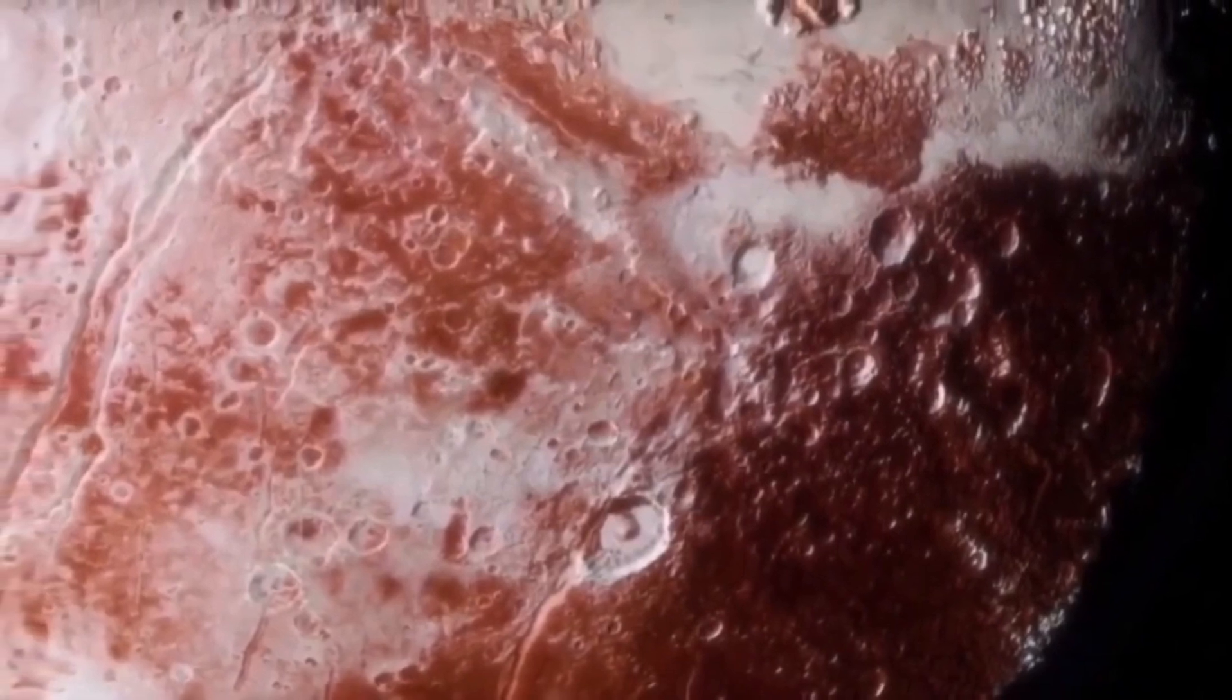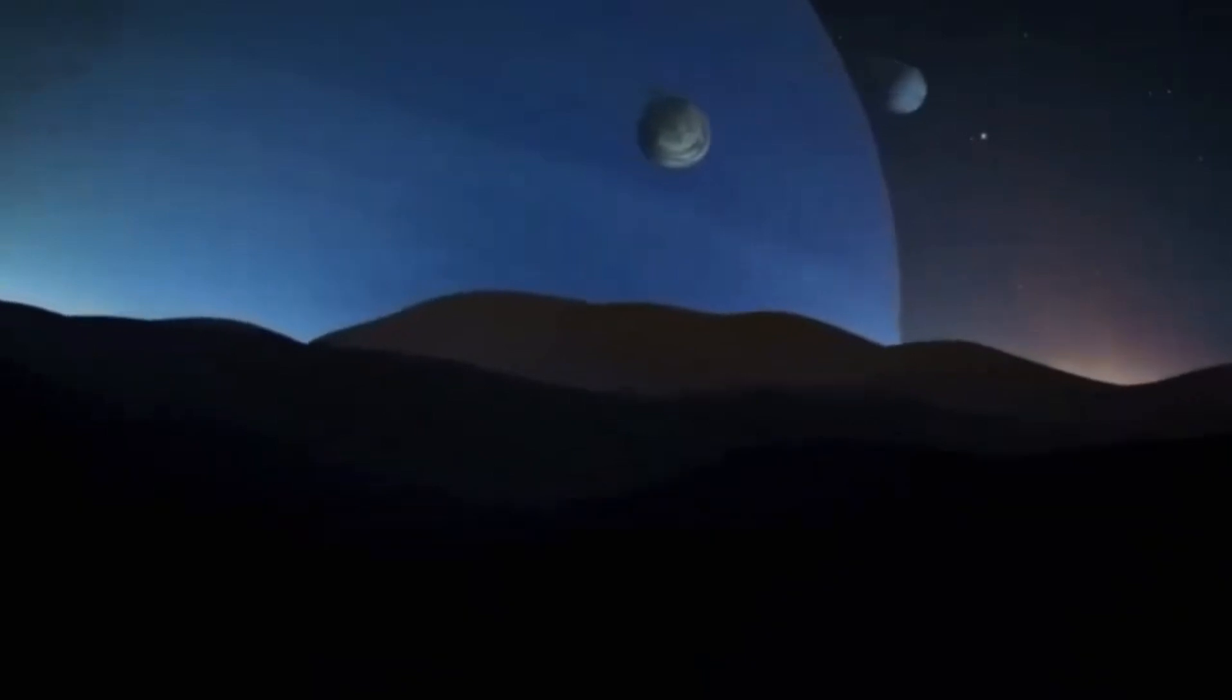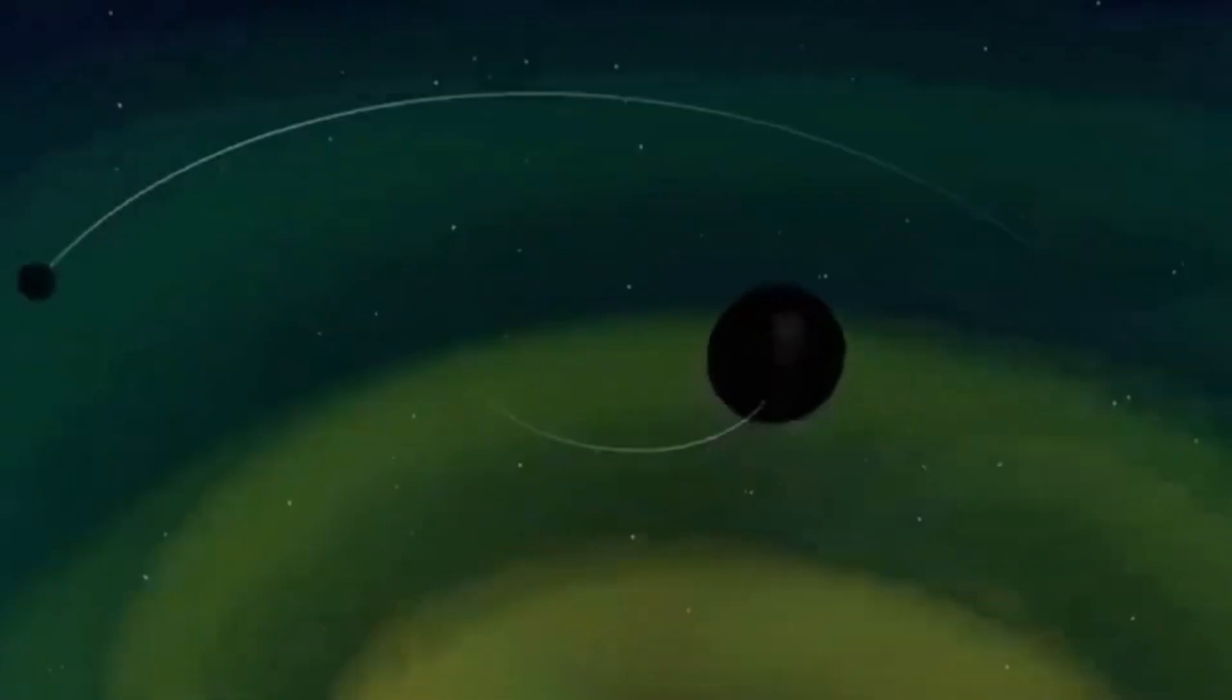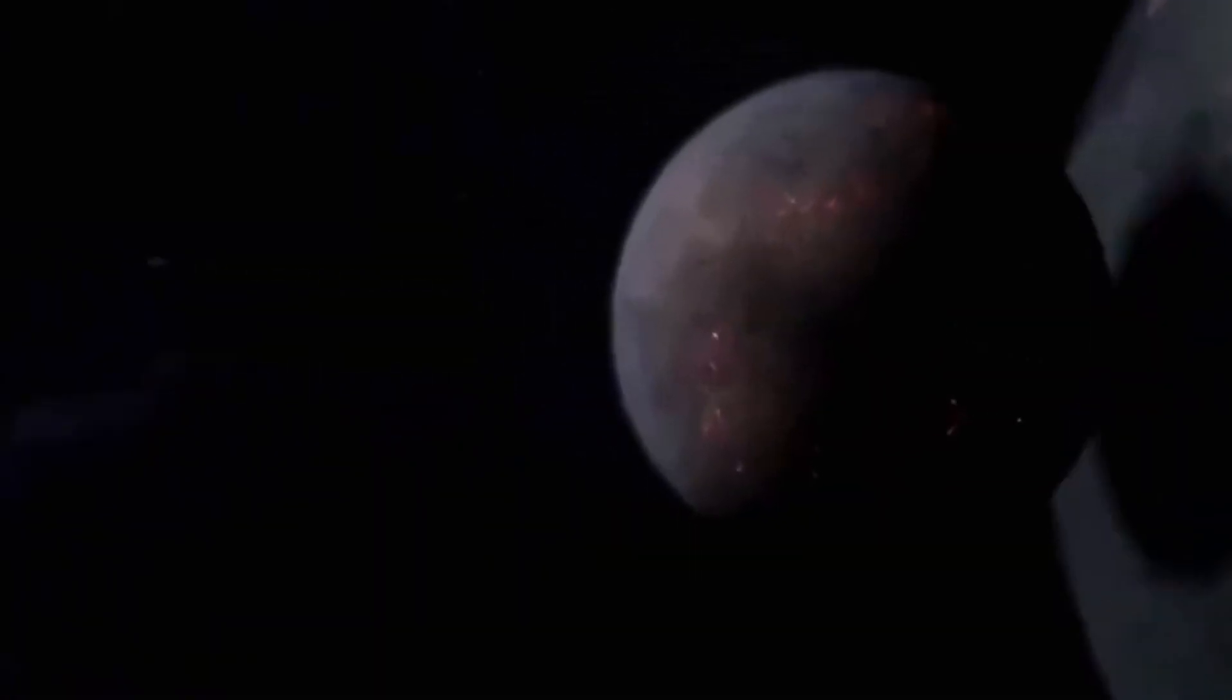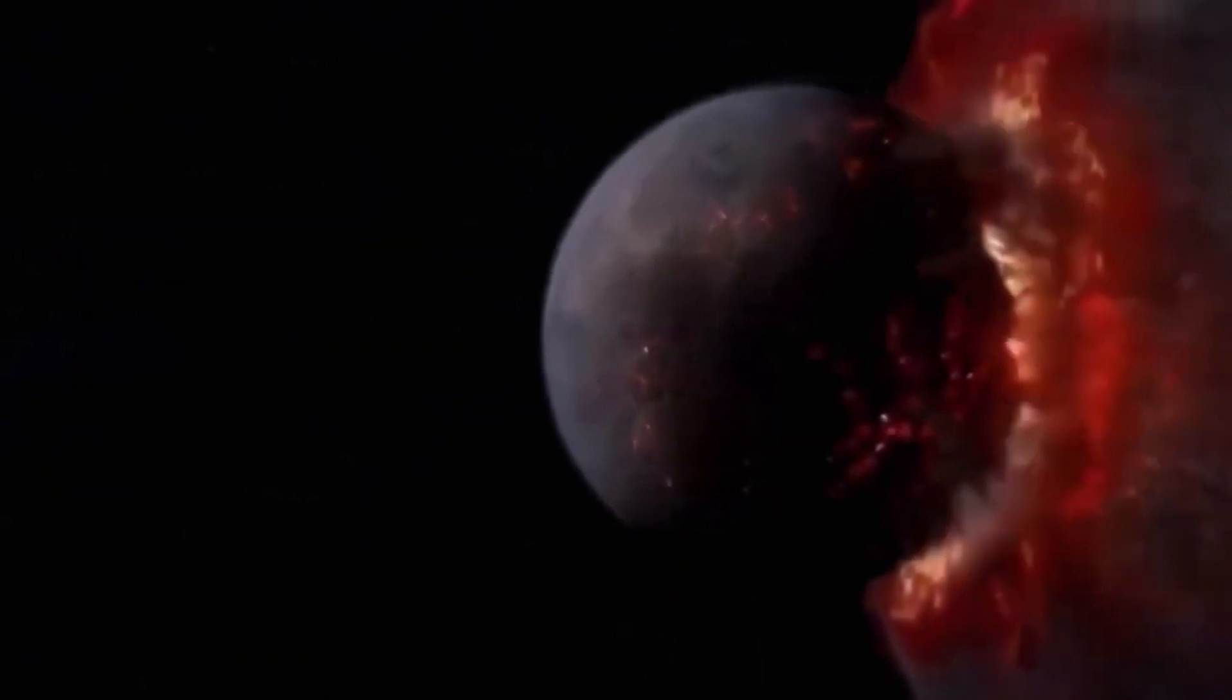The telescope captured the clearest view of Neptune's rings in more than 30 years. Its near-infrared camera NIRCAM provided an image where Neptune appeared dark, almost black, against the background of space. This darkness is due to the absorption of red and infrared light by methane gas in Neptune's atmosphere. Bright stripes and spots in the image are clouds of methane ice, reflecting sunlight and appearing almost white. Thanks to this technique, Neptune's fine ring system became clearly visible for the first time.